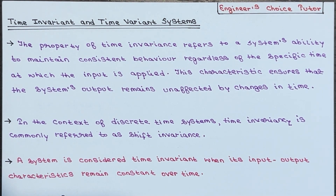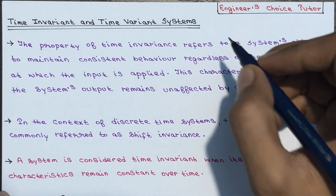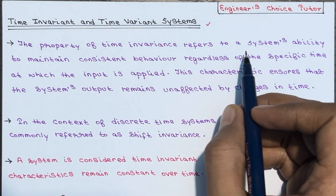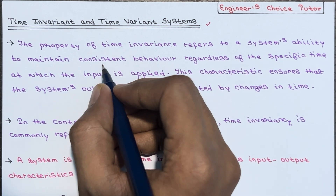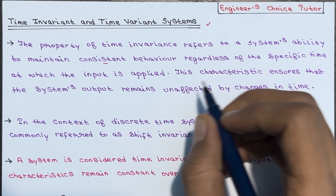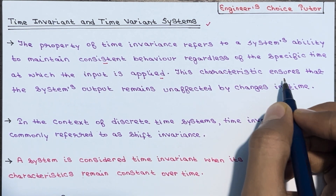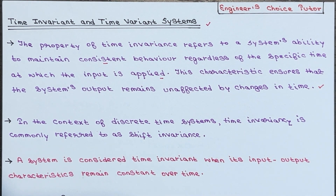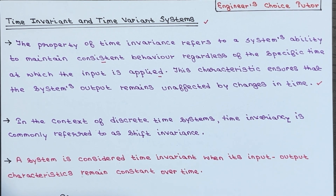In this lecture we will talk about time invariant and time variant systems. Time invariance is the property of a system which makes the behavior of the system independent of time. The property of time invariance refers to the system's ability to maintain consistent behavior regardless of the specific time at which the input is applied. This characteristic ensures that the system's output remains unaffected by changes in time.